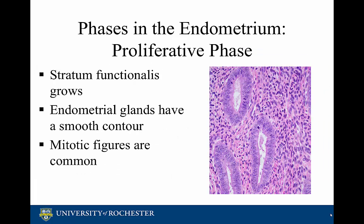The endometrium goes through three main phases during the menstrual cycle: the proliferative phase, the secretory phase, and the menstrual phase. The proliferative phase is the phase where the stratum functionalis grows. During this phase, the endometrial glands have a smooth contour and mitotic figures are present.